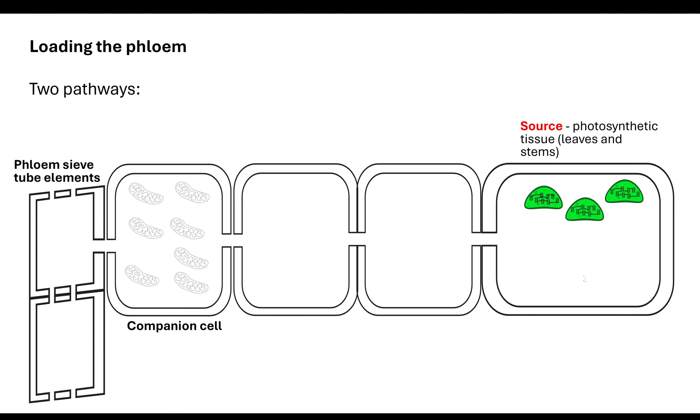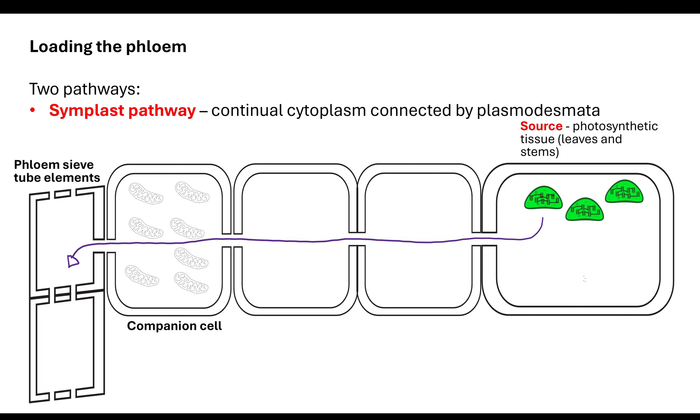To load the phloem, the first thing to know is there are actually two pathways. The first pathway is the cytoplasm, and that is the symplast pathway. When sucrose is produced through the condensation reaction, it can diffuse as a passive process through the cytoplasm, through different cells, connected by plasmodesmata, until it is loaded into the phloem sieve tube elements. Although that does occur, not a lot of the movement happens through the symplast pathway.